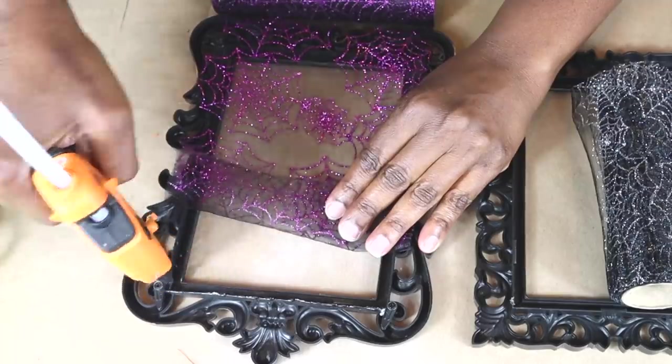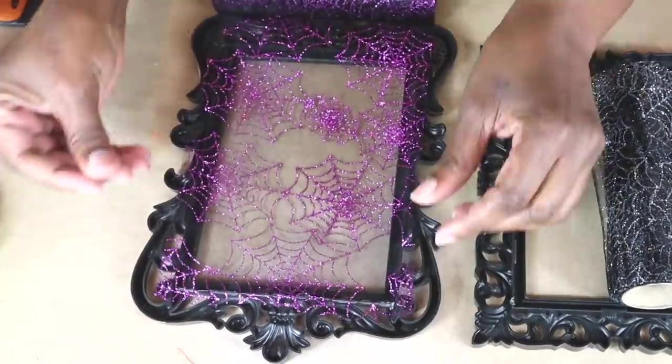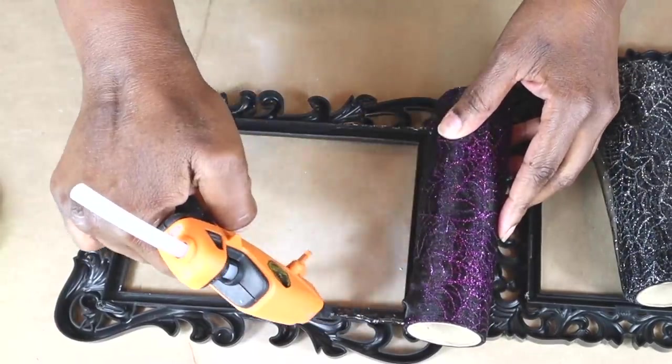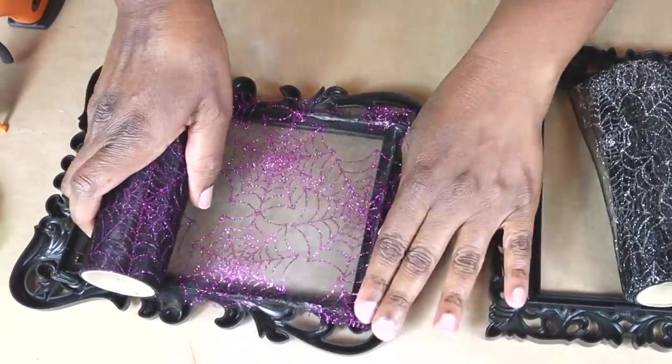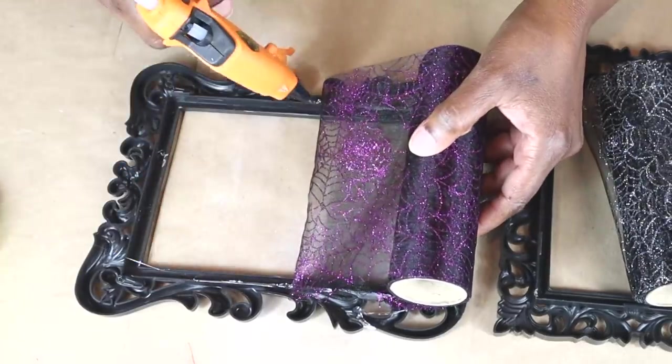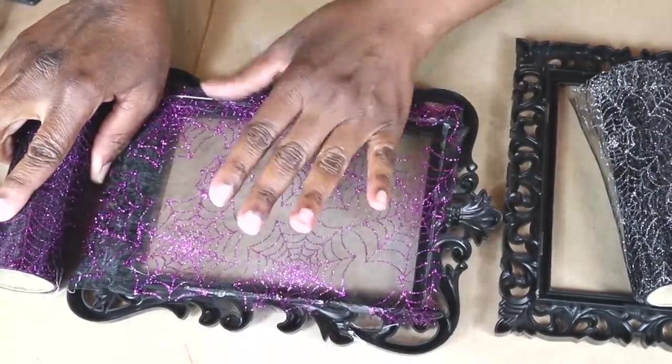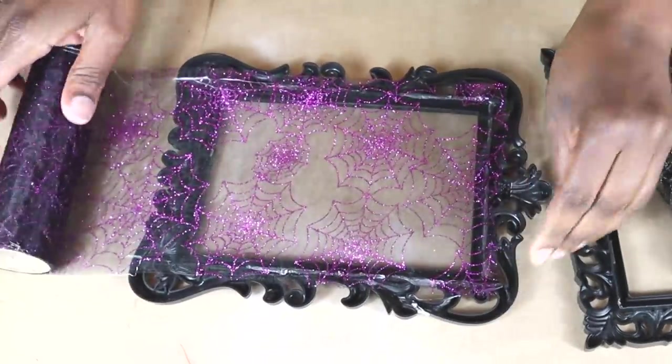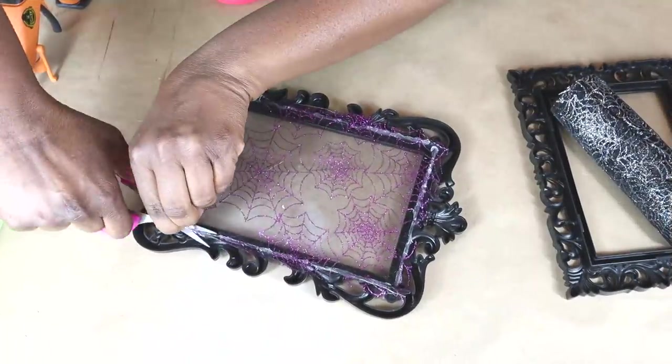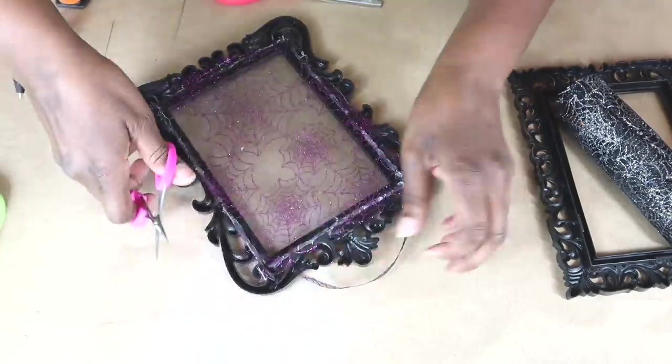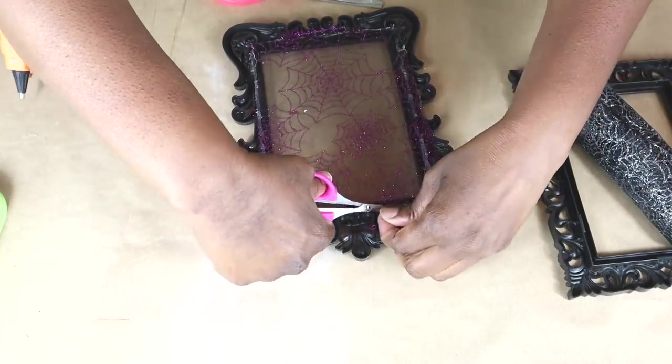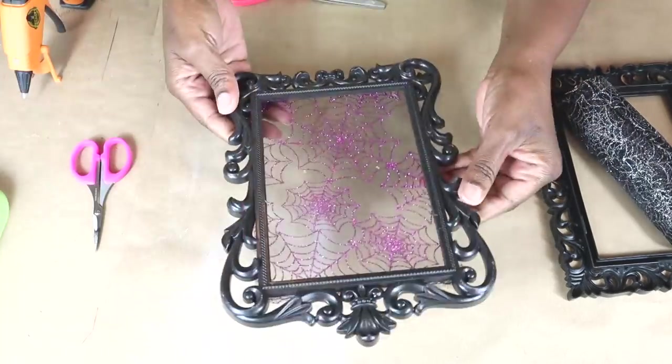Using a bit of hot glue, I just attach the mesh to the back of the frame. Be sure to pull it taut so that it does not sag once it's complete. Now I'm going to use the little detail scissors to cut away the excess mesh so you can't see it from the front. And the first one is done.